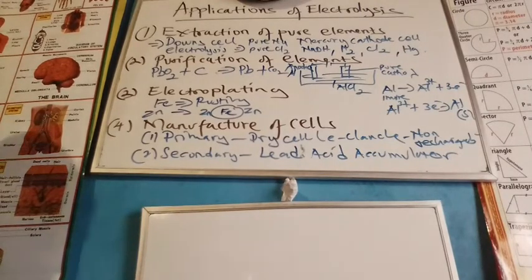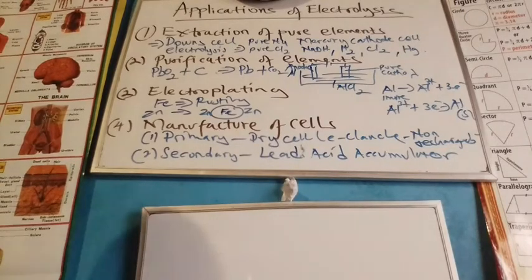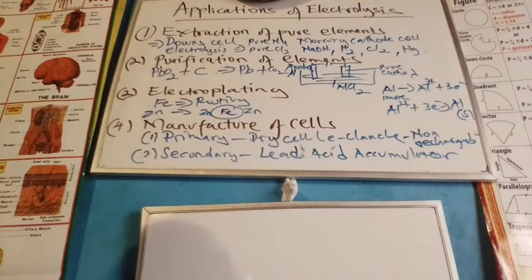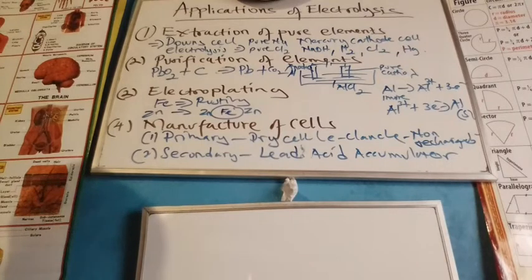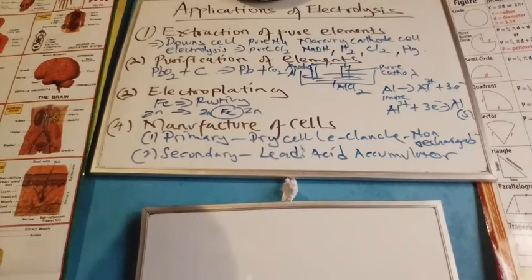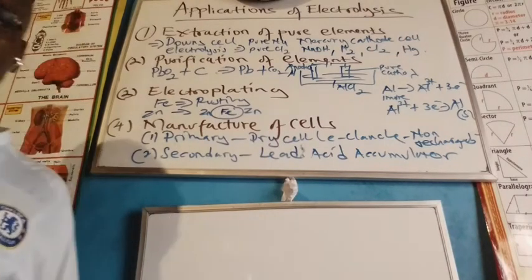And in a nutshell, the importance of studying electrochemistry. So, we have said that there is extraction of pure elements through down cell electrolysis or mercury cathode cell. Purification of elements at the cathode. Electroplating, covering to prevent rusting and corrosion. Manufacture of cells, which are batteries that we use in our homes and other gadgets. Secondary cells are for motor vehicles. Thank you.